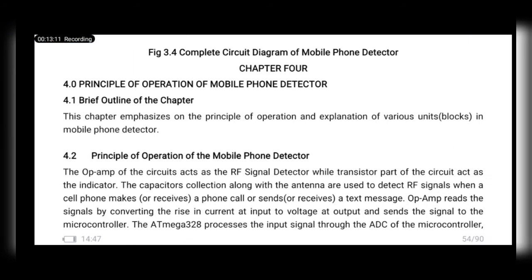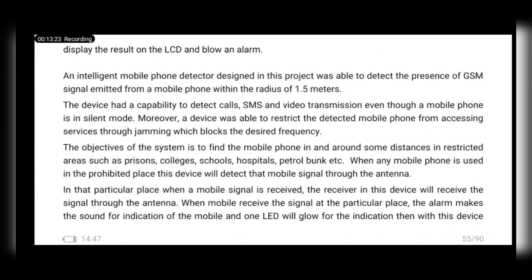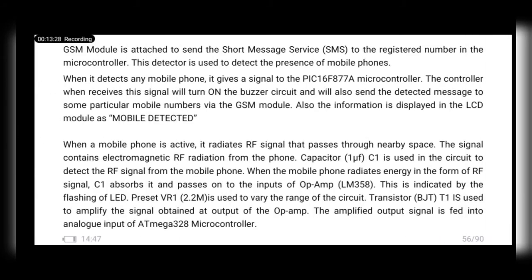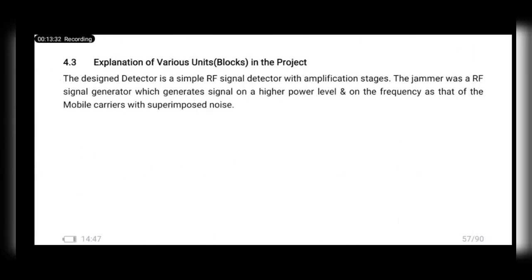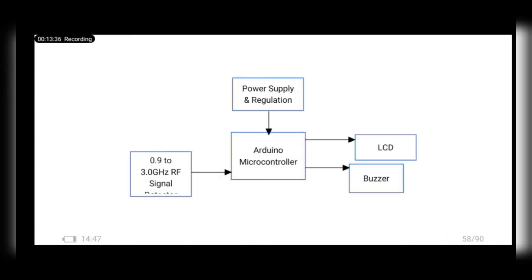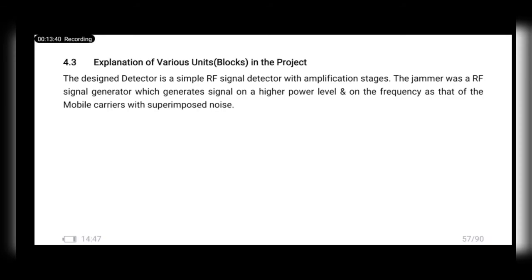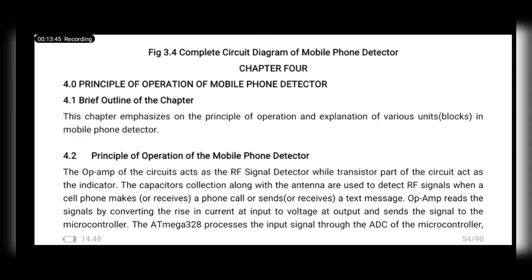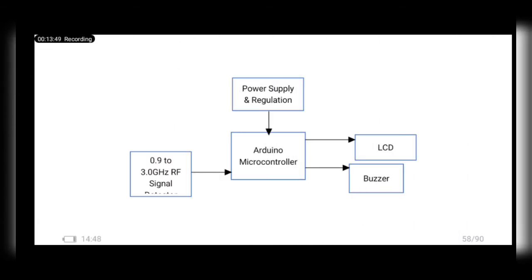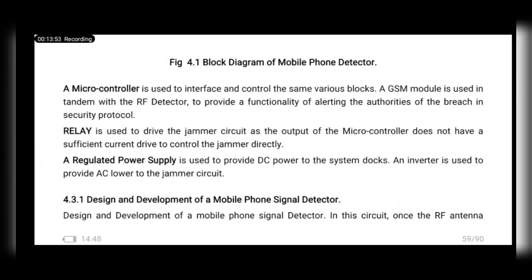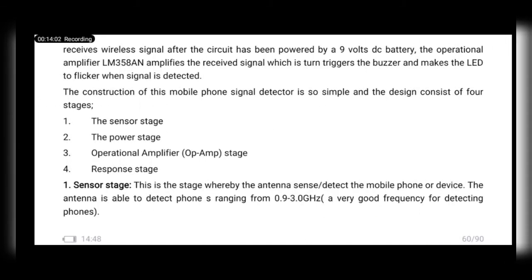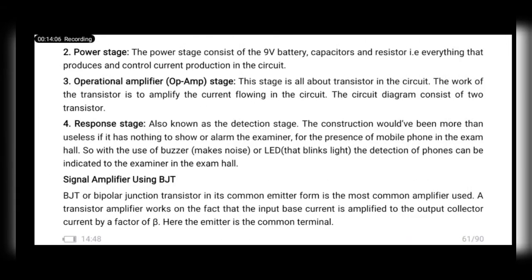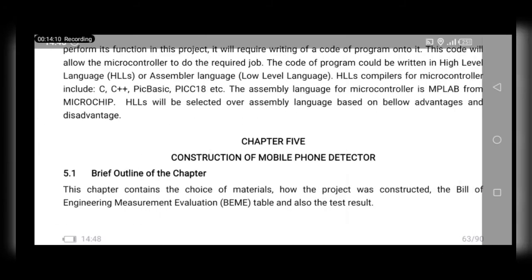Chapter four covers the principle of operation of the mobile phone detector, with a brief outline and expansion of various units in the block diagram. You talk about the working principle — how the device operates. You can find principle of operation content for your project freely online. Then you expand every unit in the block diagram: power supply regulation, microcontroller, relay — going back to the block diagram and explaining each one, including the power stage and operational stage.